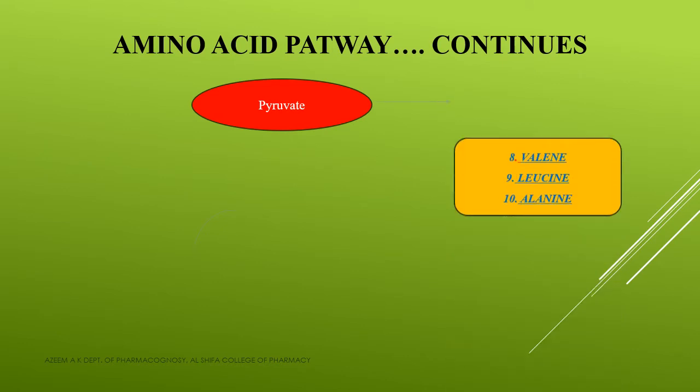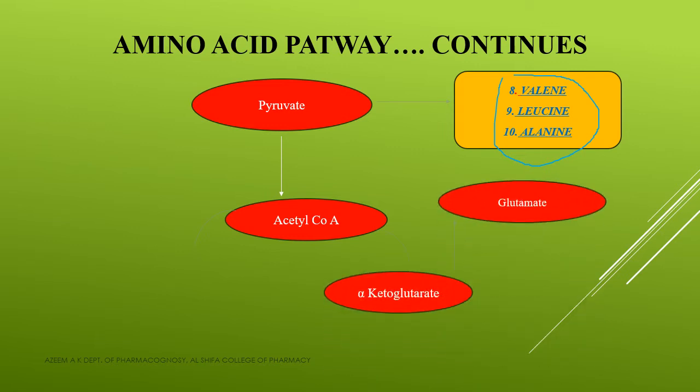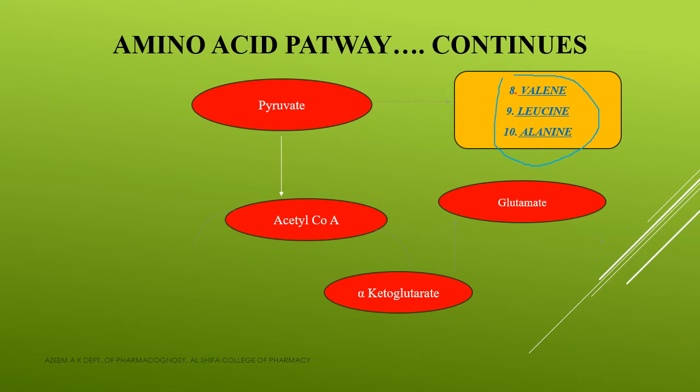The next step involves pyruvate. From pyruvate, three different amino acids are obtained: valine, leucine, and alanine. From pyruvate, acetyl-CoA is obtained, and this acetyl-CoA enters into the TCA cycle.